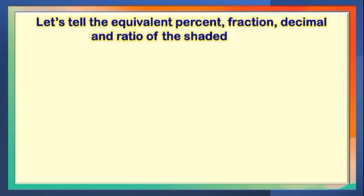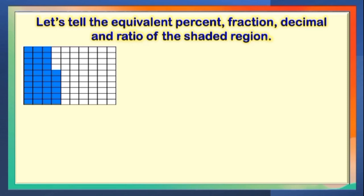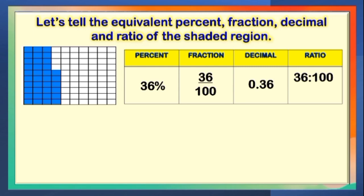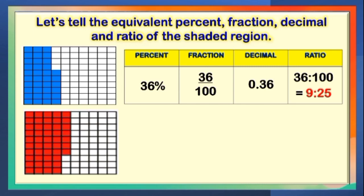Now let us have more examples by finding the equivalent percent, fraction, decimal, and ratio of the shaded region. Number 1: The equivalent percent of the shaded region is 36%. Fraction: 36 out of 100. Decimal: 0 and 36 hundredths. The ratio is 36 is to 100, and the lowest term for this is 9 is to 25.